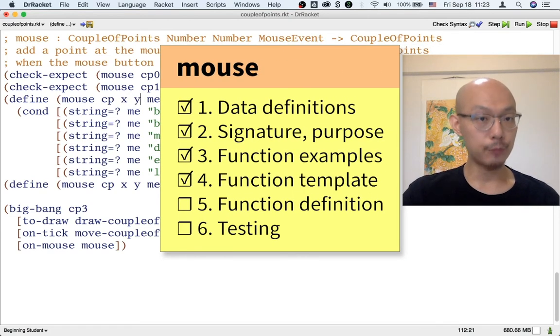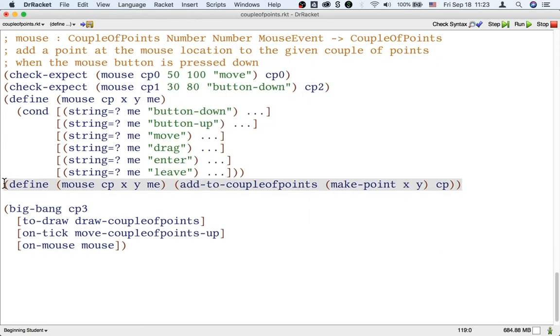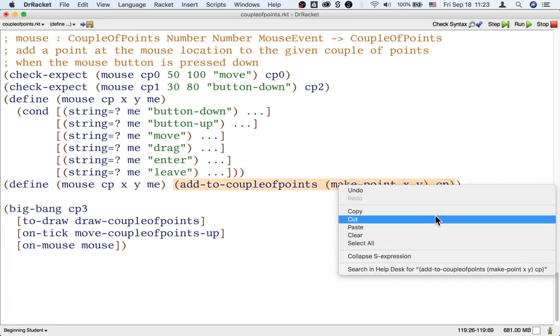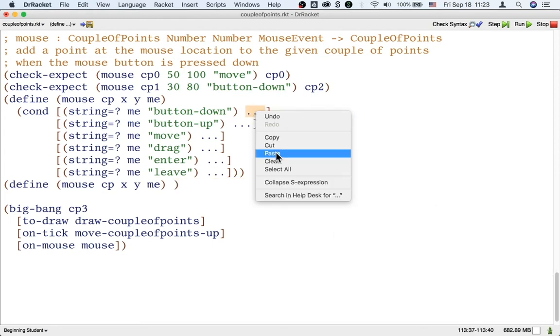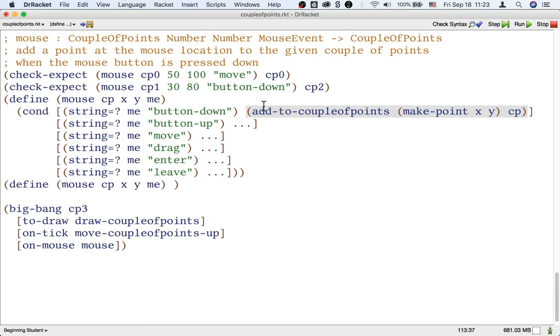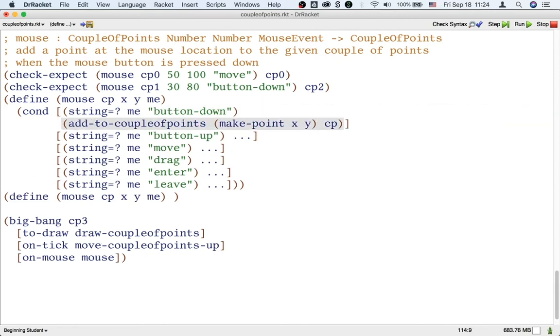We're in step five of the design recipe for the new mouse function. Here's the old definition. It's not correct anymore because it doesn't work in the move case, but it does work in the button-down case. So I'm going to take it and use it to fill in the button-down case. Okay, this line is getting a little bit too long, so I'm going to split it. In all the other cases for all five other mouse events, we actually just want to return the same couple of points that we got as the input. So in all five cases, we could fill in CP. CP is the input.